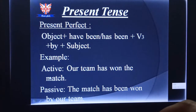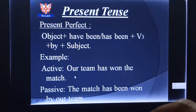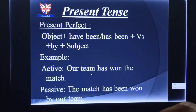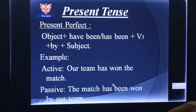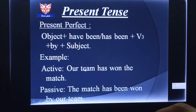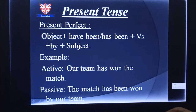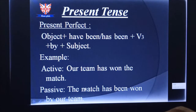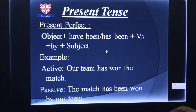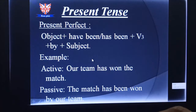Example for present perfect — Active: 'Our team has won the match.' Passive: 'The match has been won by our team.' Here, 'our team' becomes the object in passive, and 'the match' becomes the subject. Whether to use 'have been' or 'has been' depends on the subject.